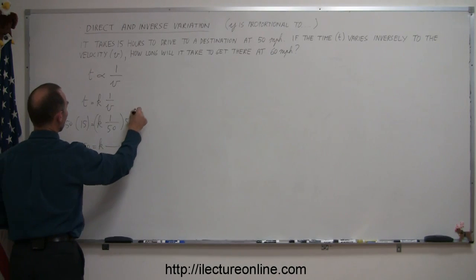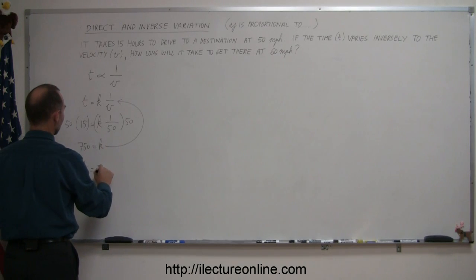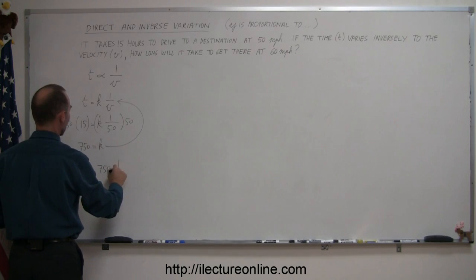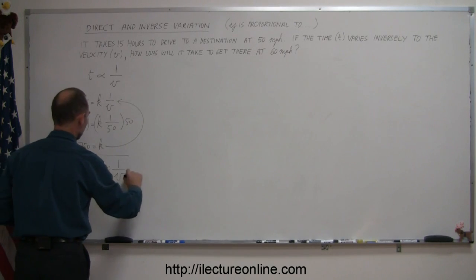And then we can plug that back into the equation, which means that t, the time that it takes to get anywhere, is equal to 750 times 1 over v. And there's my equation.